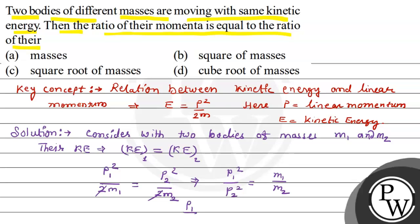If we want P1 upon P2, we need to take square root. Square root of m1 divided by square root of m2. That is P1 is to P2 equals to root m1 is to root m2. The ratio is square root of masses.